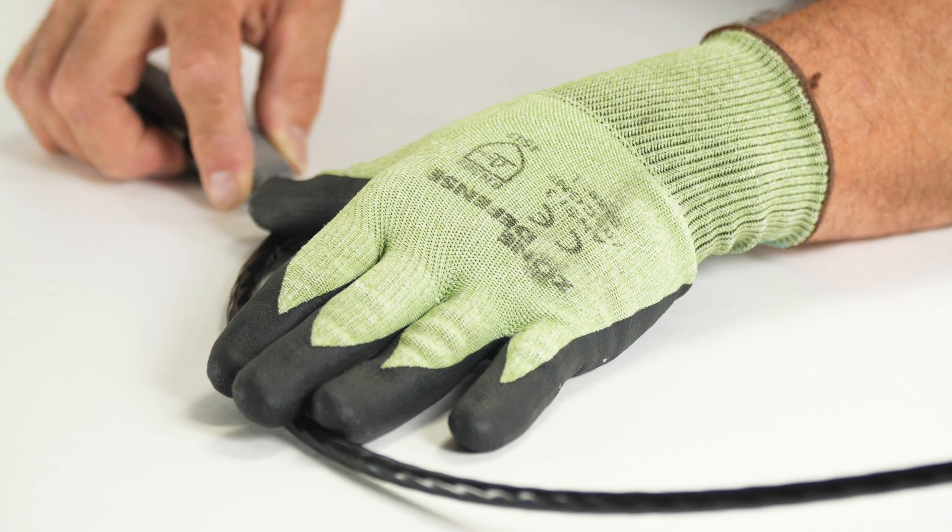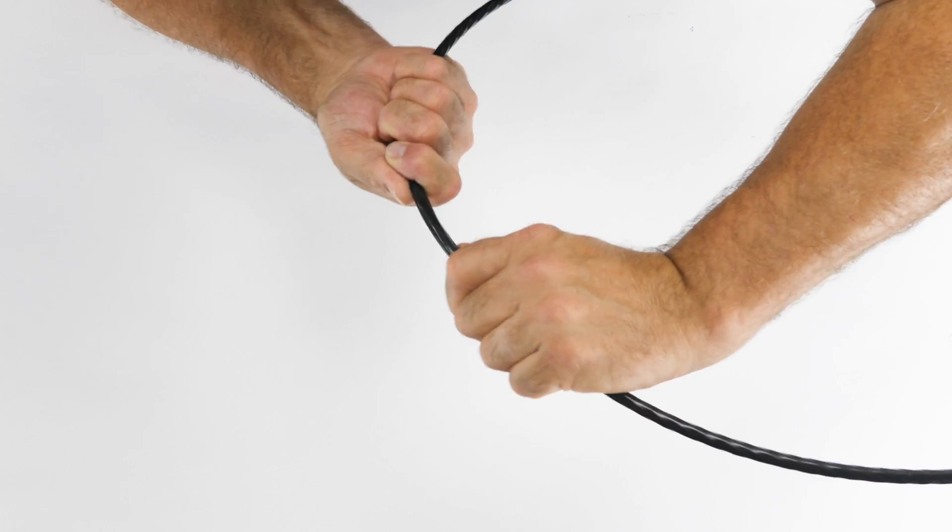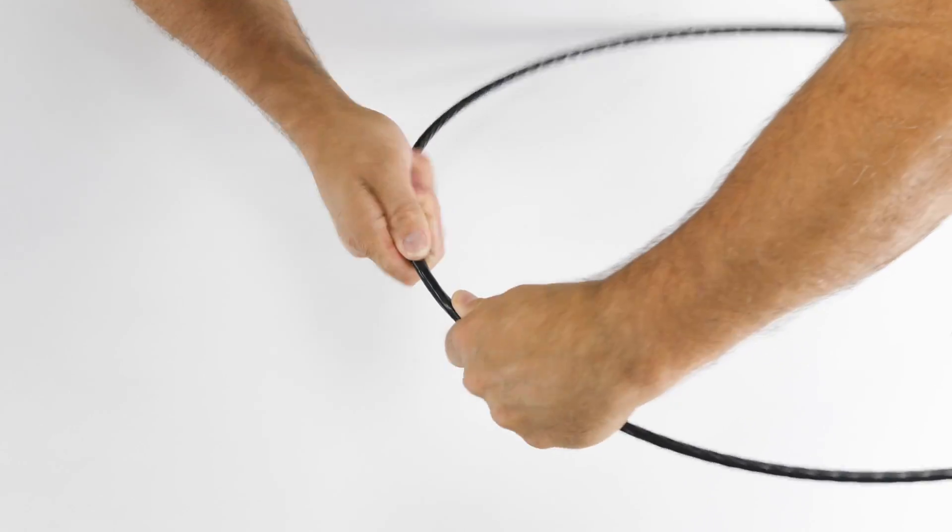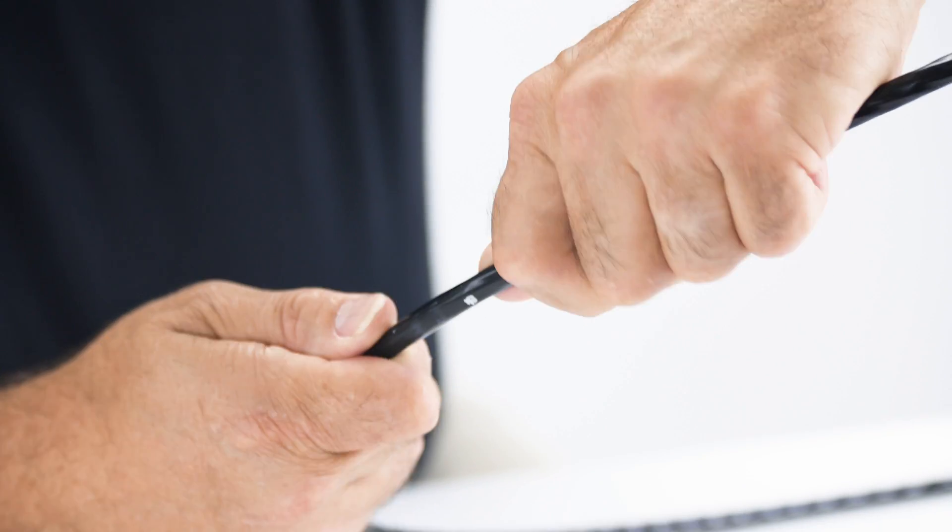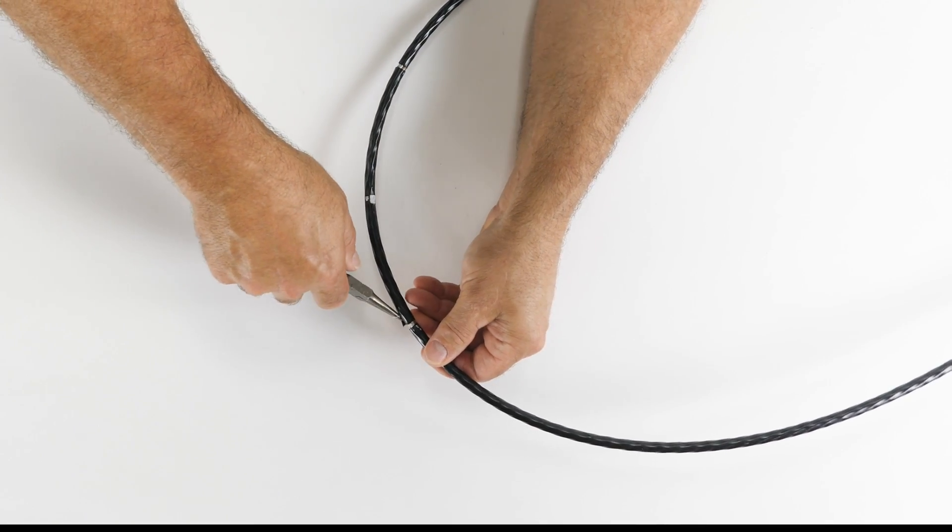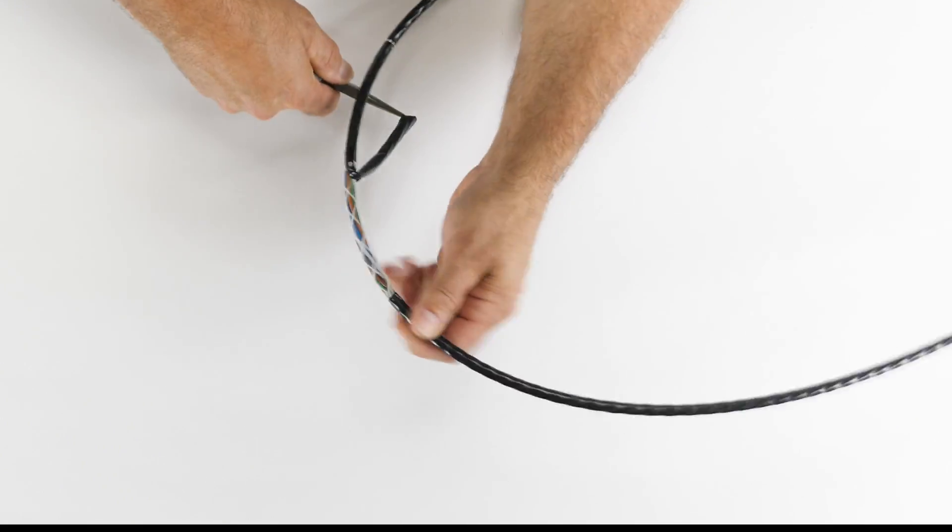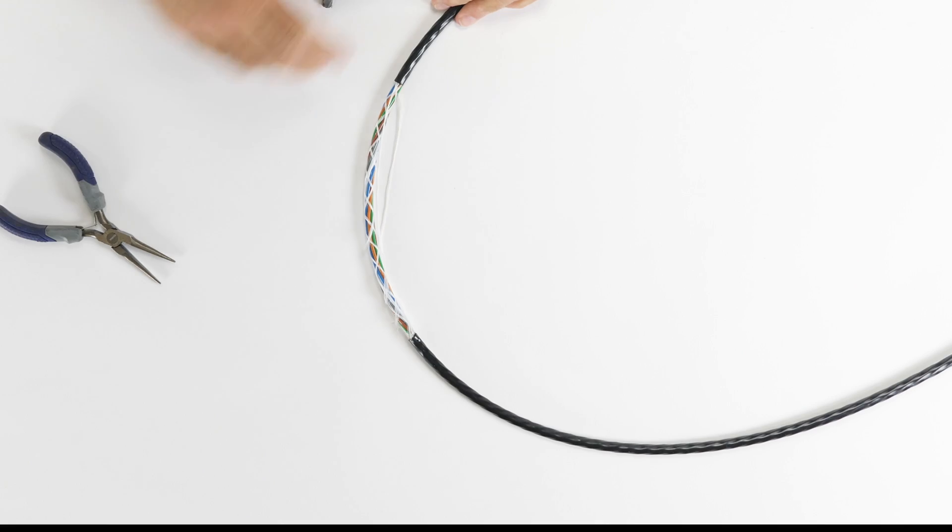After the surface has been scored, remove and store the cut-resistant glove. Place both hands within the 8-inch section of cable and slightly twist the outer jacket back and forth in order to open the jacket surface. At the ring-cut location, grip the jacket's edge with a pair of needle-nose pliers and remove the 8-inch portion from the remaining cable.